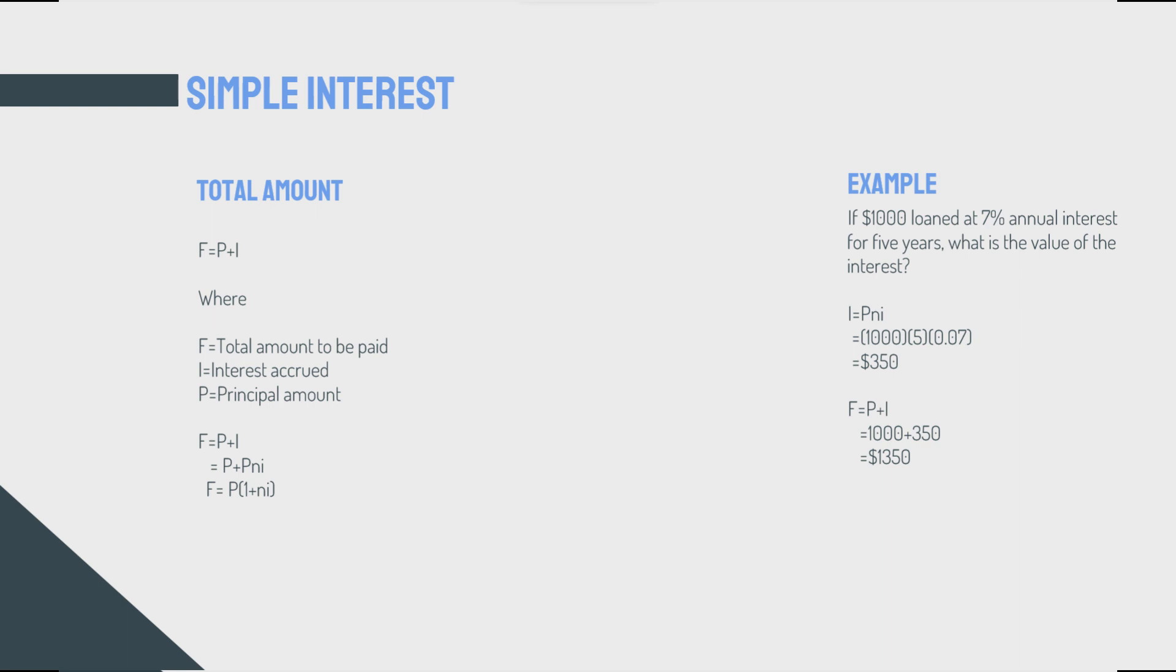And that would be - so in our example, $1,000 is the P, 7% is the small i, the annual interest, and five years would be our n. n equals five. Replace all the values in the equation, you'll be able to find I. Then we know, as a total amount, F equals P plus I, so that would be $1,000 plus $350, would be $1,350.